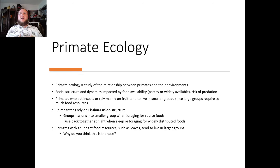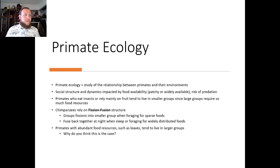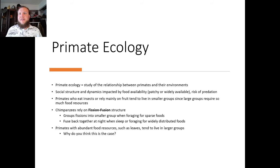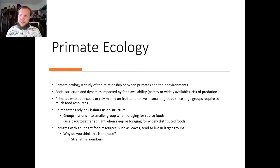All of this deals with ecology — how these behaviors are adapted to different environments. Social structure and dynamics are impacted by food availability caused by the environment and the risk of predation, causing different social structures to adapt accordingly. Primates relying mainly on insects or fruit tend to live in smaller groups, since larger groups require more food resources. Chimpanzees rely on something called fission-fusion: groups spread out during the day to collect resources on their own, but at night they come together for safety, and form coalitions when hunting. Primates with abundant resources such as leaves tend to live in larger groups because there's more to go around.